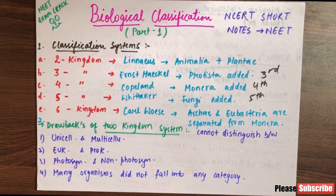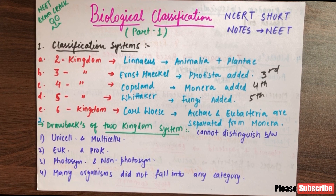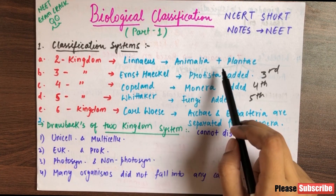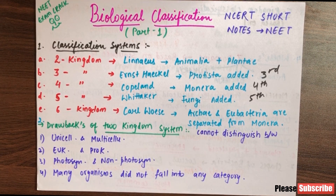I have made a detailed video on biological classification on my channel. If you have not watched those videos, you can find the link. There are very good videos that will clear your whole basics. Next, let's discuss the drawbacks of the 2-kingdom system given by Linnaeus.